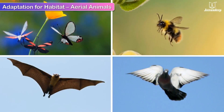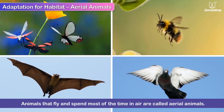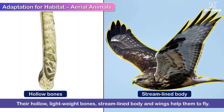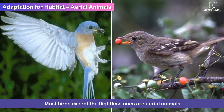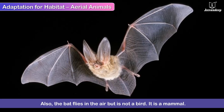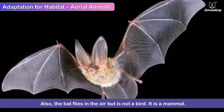Animals that fly and spend most of their time in the air are called aerial animals. Their hollow, lightweight bones, streamlined body and wings help them to fly. Most birds, except the flightless ones such as the ostrich and the penguin, are aerial animals. The bat also flies in the air but it is not a bird — it is a mammal.